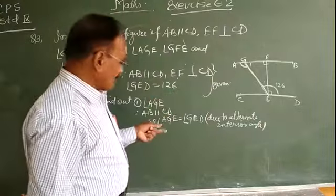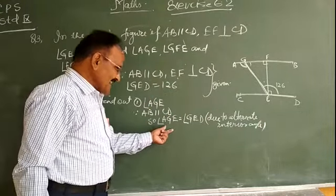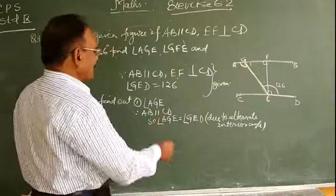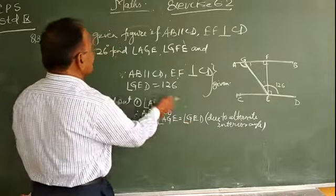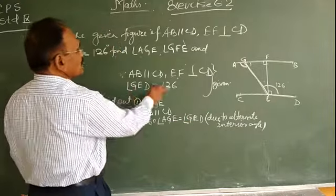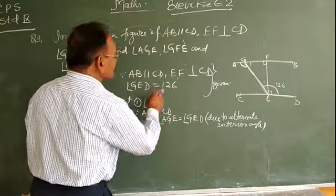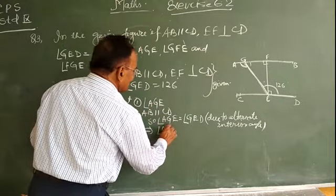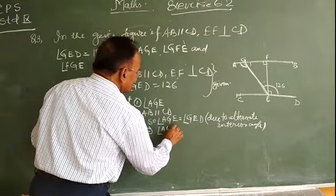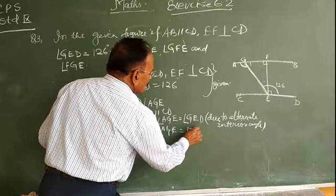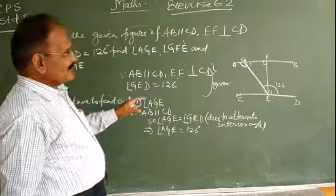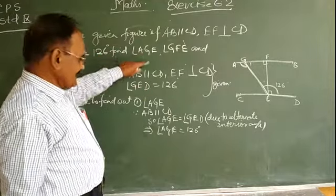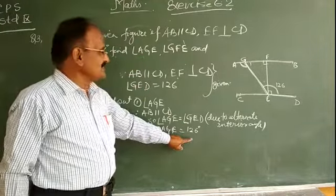Because AB and CD are both parallel, this angle is equal to this angle. Angle GED is given as 126 degrees, so angle AGE is equal to 126 degrees.